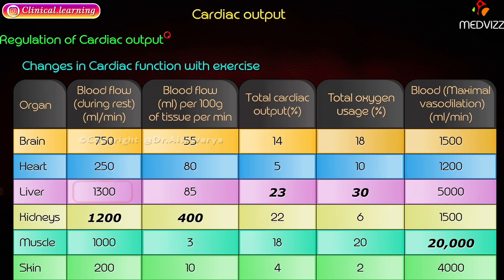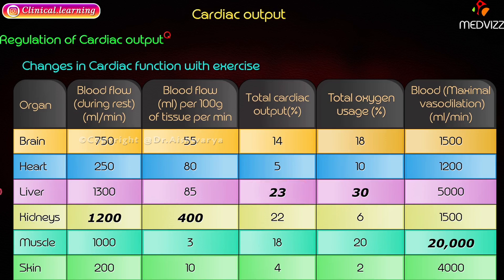Blood flow to the liver during rest is 1300 ml per minute, which is 85 ml per 100 grams of tissue per minute. Total cardiac output to the liver is 20 to 30 percent, and total oxygen usage is 30 percent. With maximum vasodilation, the liver receives 5000 ml per minute, the highest among most organs except muscle.